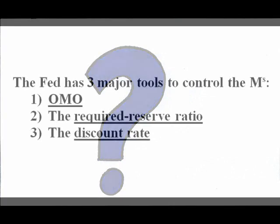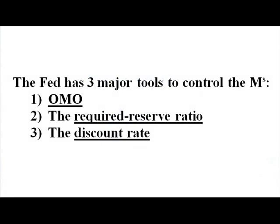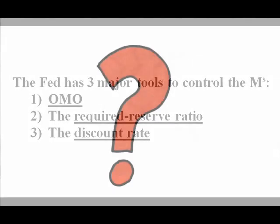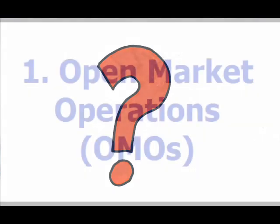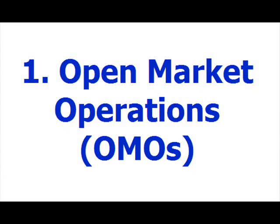The Fed has three major tools to control the money supply: one, open market operations, or OMOs; two, the required reserve ratio; and three, the discount rate. How does each of these work, and which tool or tools does the Fed prefer? Let's take them one at a time. One: open market operations.